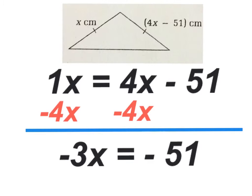When I do so, I get negative 3x on the left hand side and I get negative 51 on the right hand side. Remember, 4x minus 4x makes a 0, and 0 minus 51 gives us negative 51.